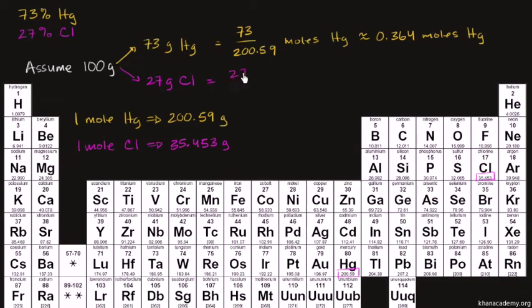And we can do the same thing for chlorine. This is going to be 27 over 35.453 moles of chlorine, which is approximately equal to 0.762 moles of chlorine.